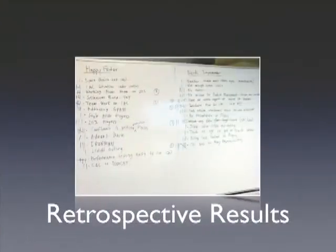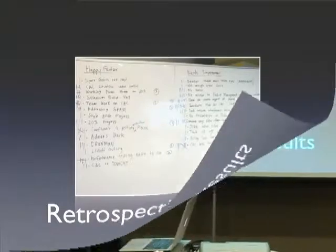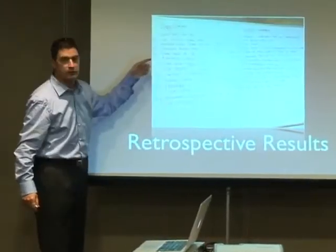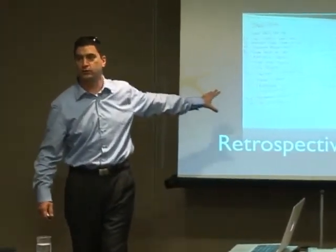What you get is a planning board like this — you have the happy factor and the needs improvement. Everybody gets a vote and we take the most popular voted ones and start specifically dealing with those issues. It's a way of first collecting all the problems, then prioritizing those problems, and then dealing specifically with those certain problems.